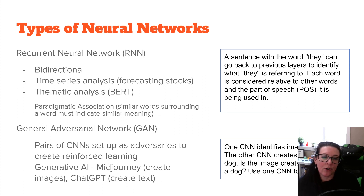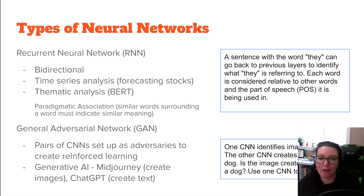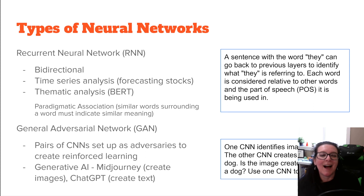You can also use recurrent neural networks for thematic analysis — analyzing text for themes where there is a paradigmatic association. We're understanding the context and meaning of words, because words that have similar words surrounding them must mean similar things. The thematic analysis approach uses BERT, where the B stands for bi-directional. That's another thing you can use recurrent neural networks for, and perhaps we'll have a video on that in the future.